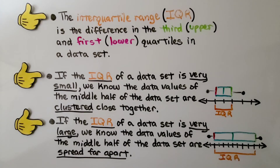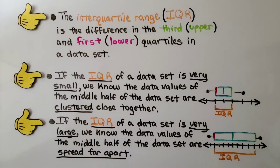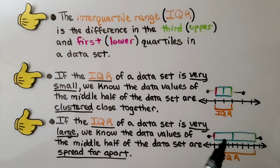For your notes: the interquartile range, or IQR, is the difference between the third (upper) and the first (lower) quartiles in a data set. If the IQR is very small, the box is really short — the data values of the middle half of the data set are clustered close together. If the IQR is very large, we have a long box — the data values of the middle half are spread far apart.